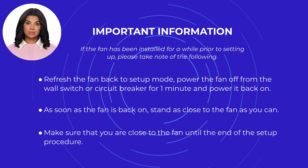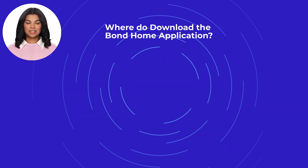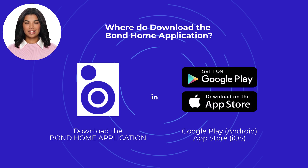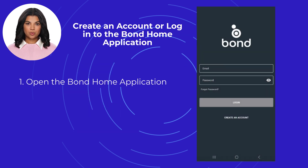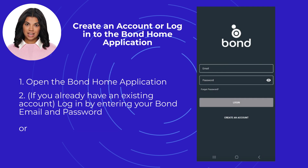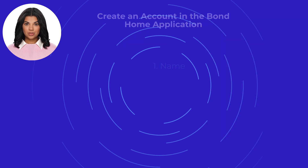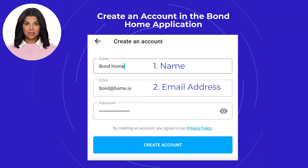If you still haven't downloaded the Bond Home application, it is available in the Google Play Store for Android and the Apple App Store for iOS. Open the Bond Home application. If you already have an existing account, log in by entering your Bond email and password. If you do not have an existing account, select 'Create an Account', enter your name, enter a valid email address to be associated with your Bond account, and enter a password.